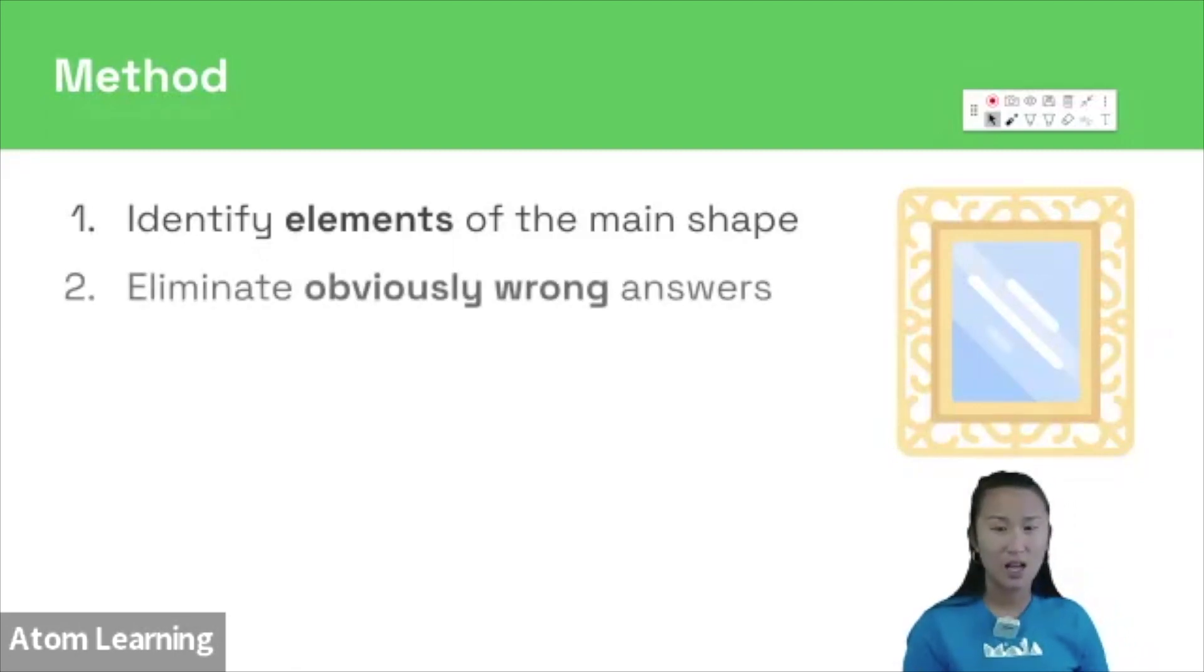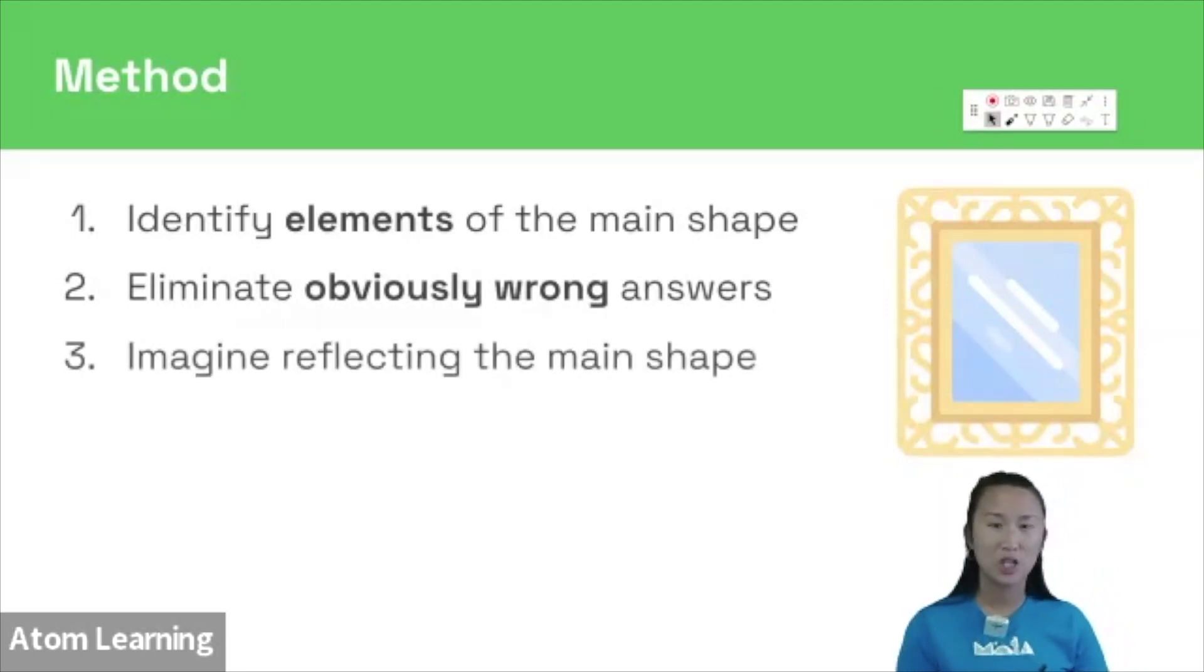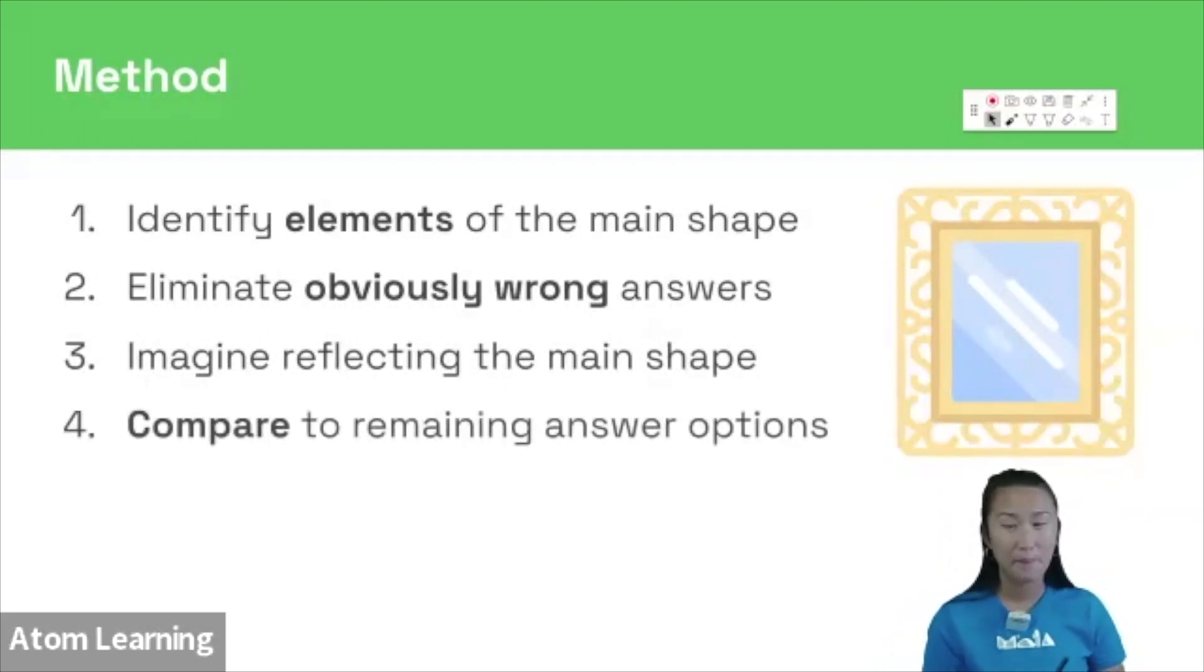Then eliminate any obviously wrong answers, things that are missing elements or maybe have the wrong element. Then imagine reflecting the main shape and compare what you visualize to the remaining answer options.